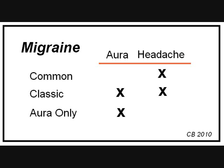The three types are: one, common migraine, which is the headache alone with no aura; two, classic migraine, which is aura followed by the headache; and three, the aura alone — visual or otherwise — but with no following headache. The International Headache Society has different terms, but I will stick with these historic names because they are familiar and easy to remember.